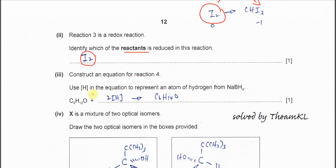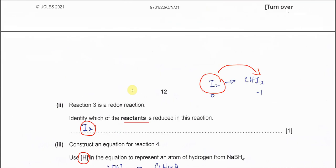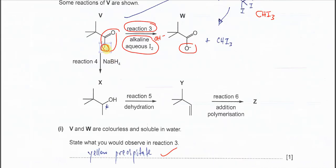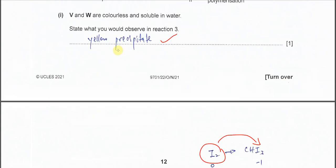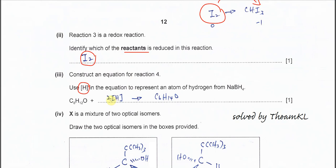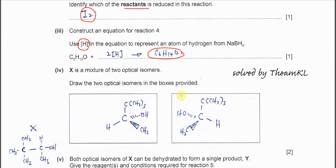Construct an equation for reaction 4. Use H with square bracket to represent the reducing agent. For reaction 4, very easy. It's from this ketone to secondary alcohol. Meaning it's going to add one hydrogen here. Pi bond breaks and it adds another hydrogen here. So in this reaction 4, you need to add 2H. In the equation, you just put 2H, then form C6H14O.